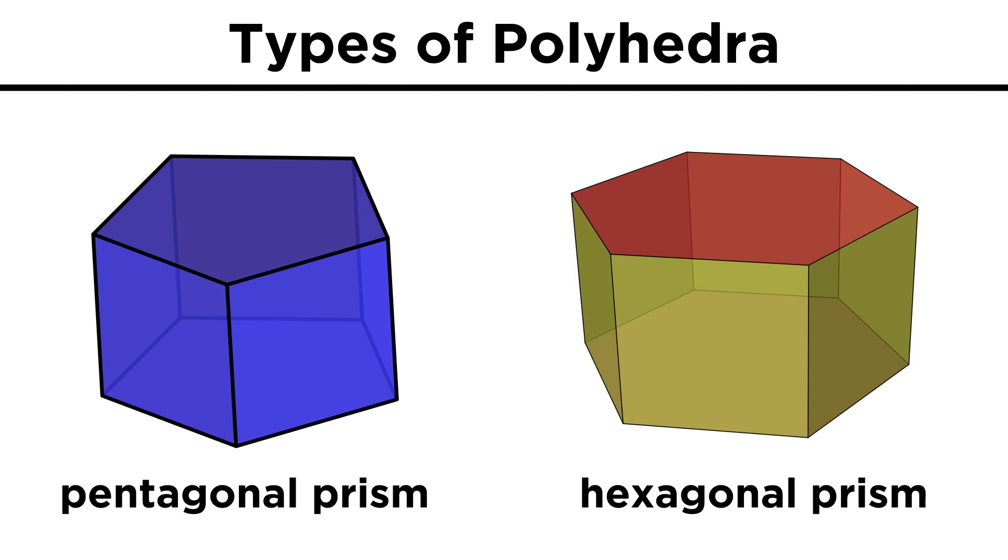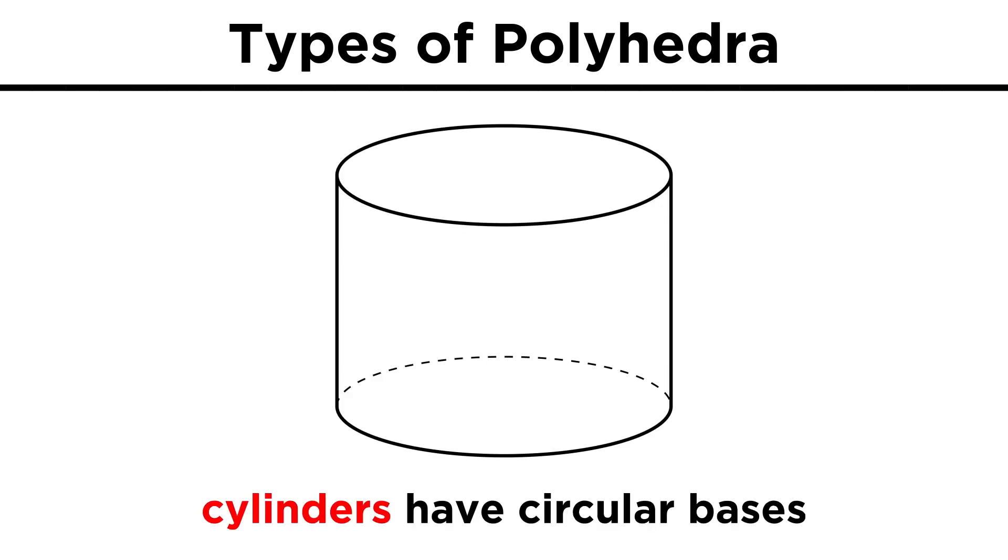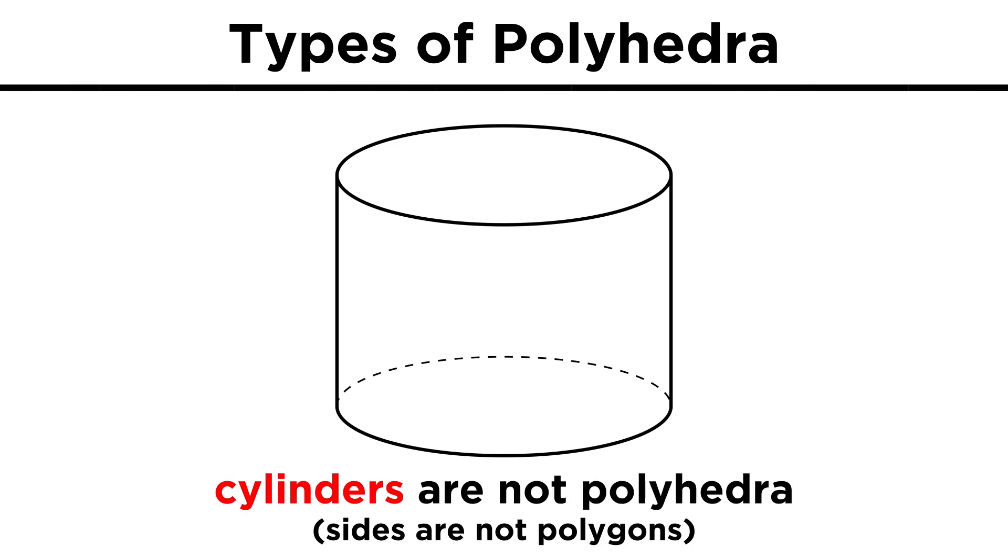We just have parallel bases of the shape that is referenced, and then as many rectangles connecting the two bases as are necessary. Another type of shape is a cylinder. Cylinders have two circular bases, but they are not considered polyhedra because none of these surfaces are polygons.